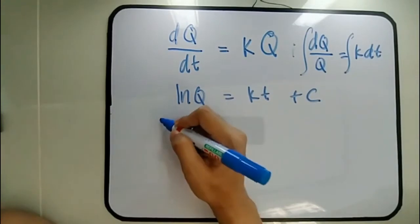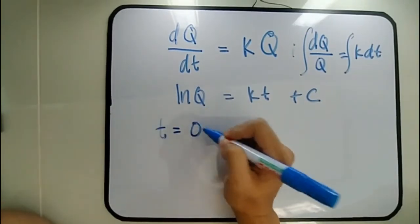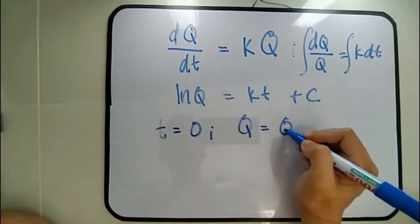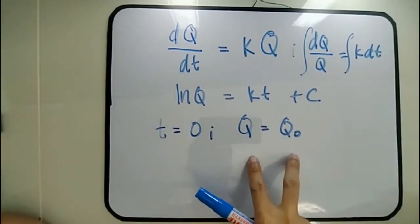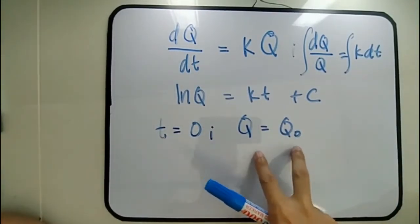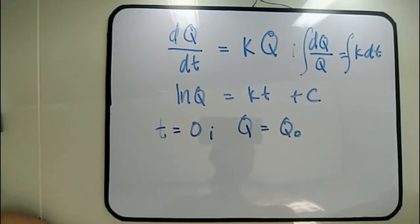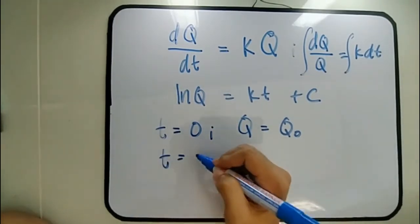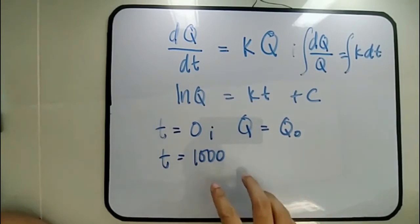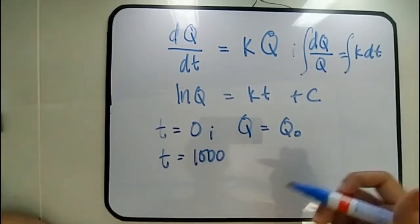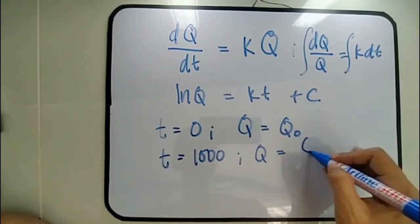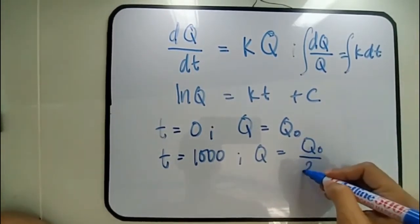At time T = 0, let Q = Q₀. That is our first condition. Since only a percentage is asked, no specific initial value is given. At T = 1000 years — that is the half-life of the material — Q equals one-half of the original.